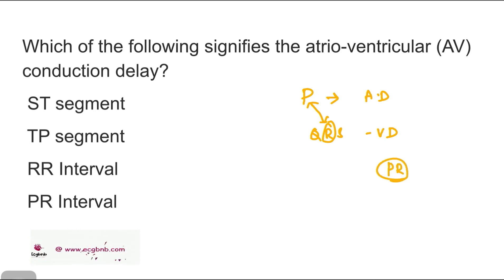So from where does the PR interval start? It starts from the beginning of the P wave. Always remember it is the beginning of the P wave, not the end of the P wave. Beginning of the P wave to the beginning of QRS complex. Sometimes if there is no Q wave present, then you can take that it is the beginning of the R wave. So always remember whenever there is an AV conduction delay, it causes prolongation of the PR interval.